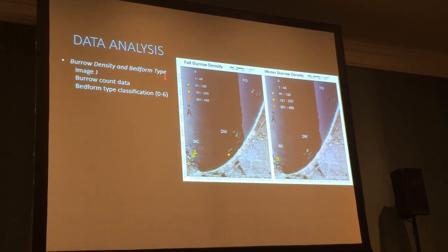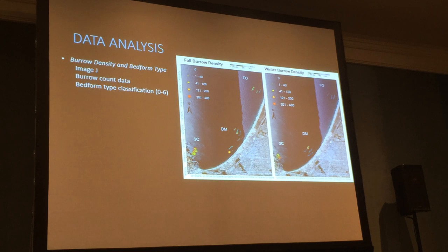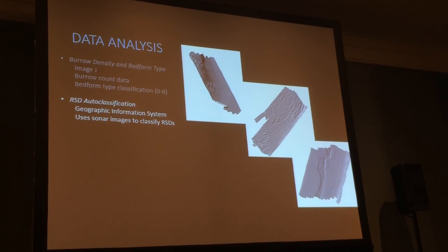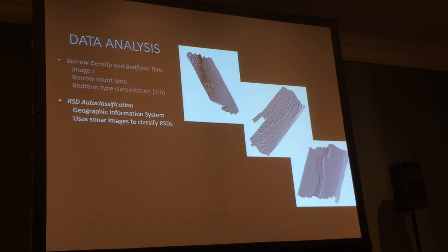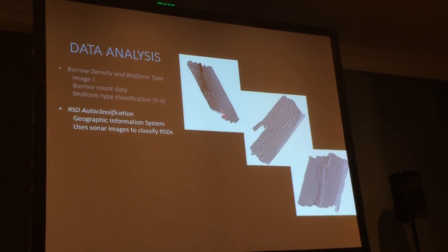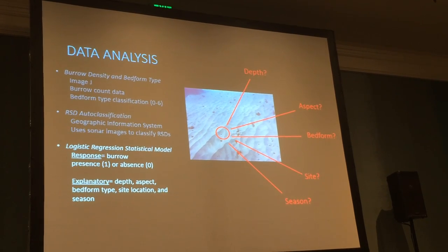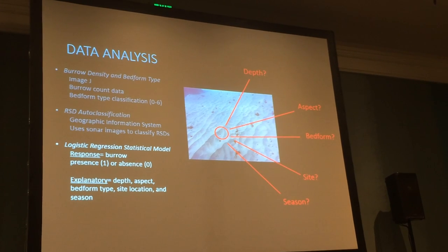Looking at the ArcMap figures, the blue areas are low density or zeros, and the warmer spots indicate higher density. For Del Monte and Fort Ord, the density drops pretty significantly — almost to zero — between the two seasons. For San Carlos, there's not much visible change. We also brought the sonar images into a geographic information system for RSD auto-classification to distinguish flat versus RSD habitat. For the final part of the analysis, I fit the data to a logistic regression model using burrow presence and absence as a response, and depth, aspect, bed form type, site, and season as explanatory variables.